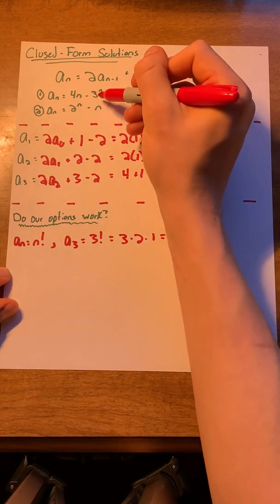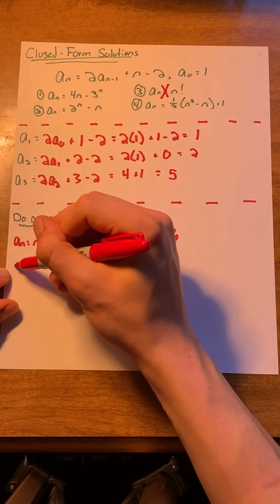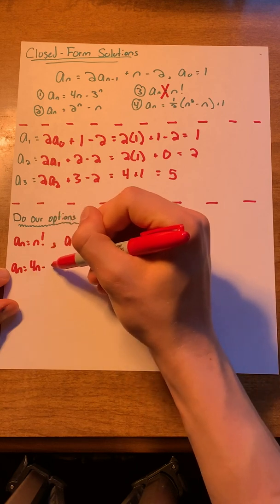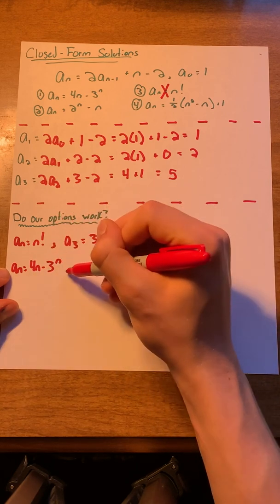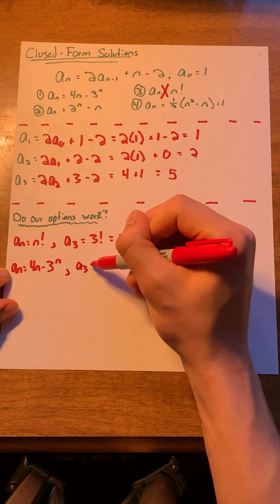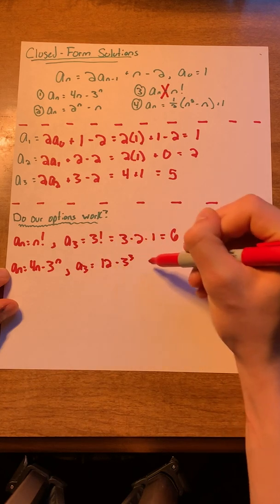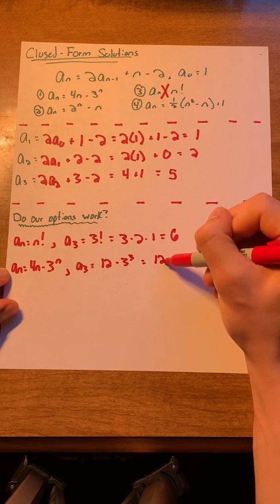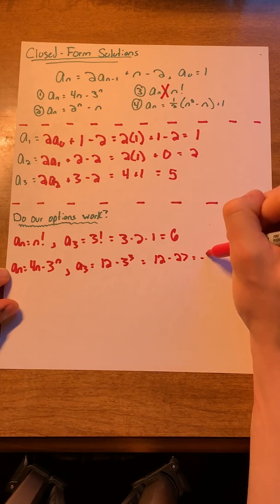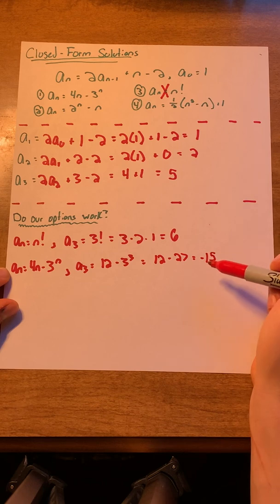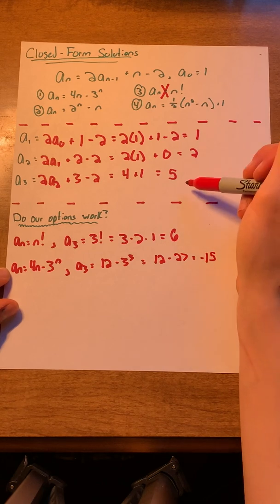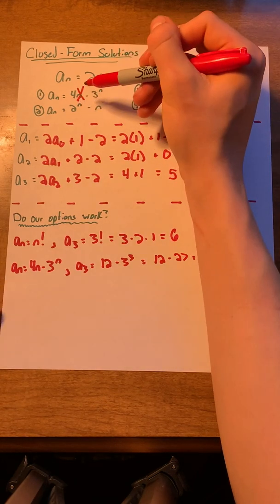Let's try 4n minus 3 to the n. a of 3 would be 12 minus 3 cubed, which equals 12 minus 27, or negative 15. Again, negative 15 definitely isn't 5, so this can't be a solution either.